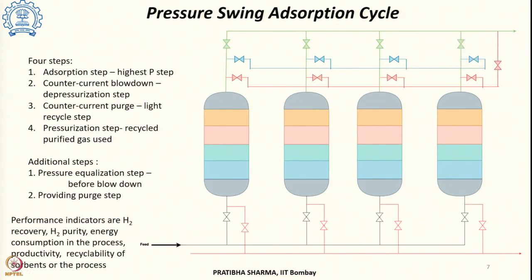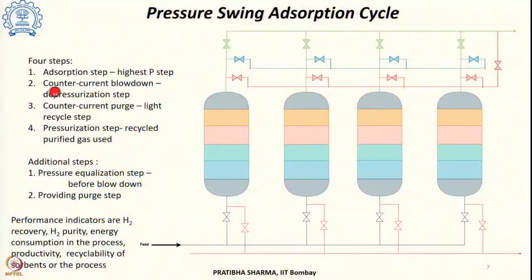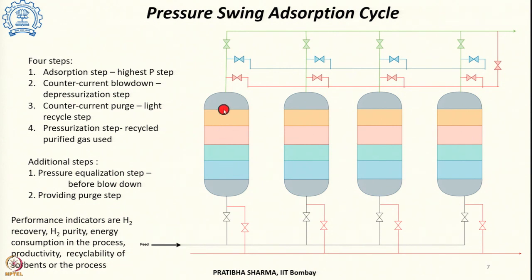The traditional Skarstrom 4-step cycle involves 4 beds and 4 steps. The first step is the adsorption step, in which the feed gas is fed at higher pressure to the bed. The fixed packed bed has layers of different adsorbents. When the feed gas passes through this bed, impurities get adsorbed in different layers. Hydrogen remains unadsorbed and can be collected at higher pressure — this is the highest pressure step.